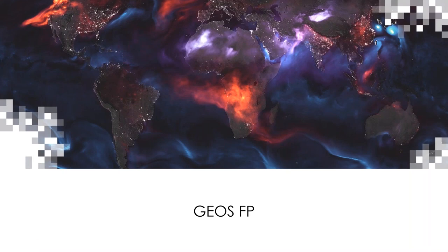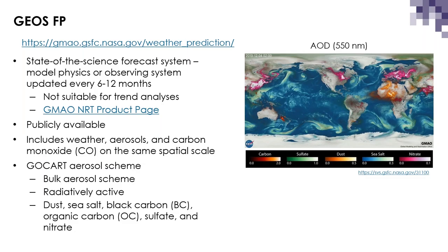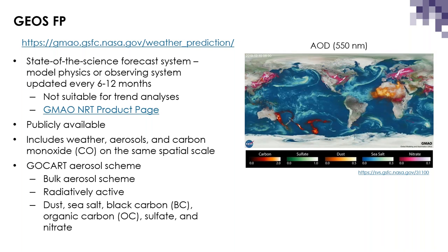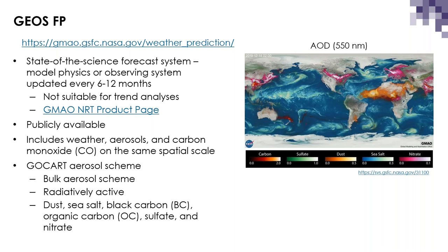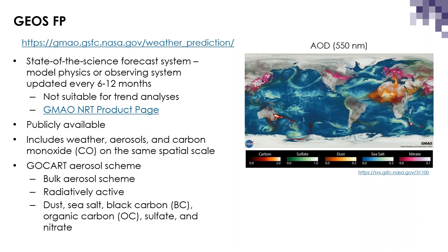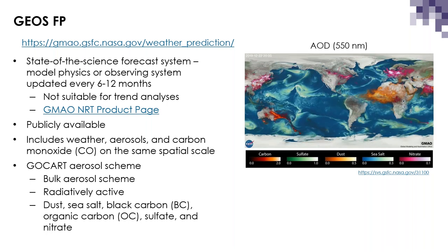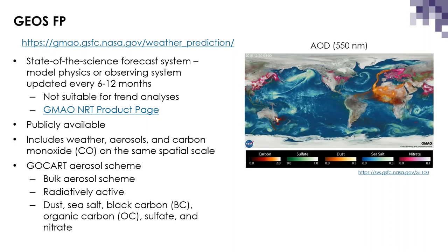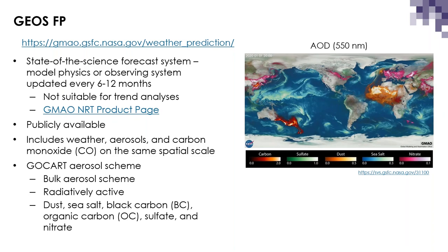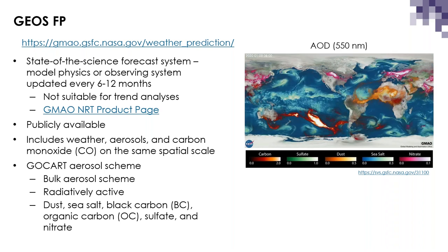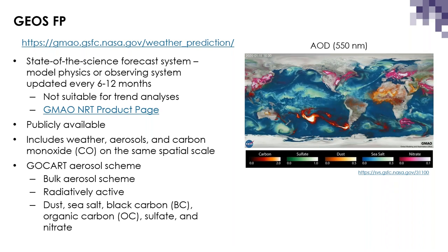We'll start our review of GEOS systems with GEOS FP. GEOS FP offers twice daily publicly available forecasts of weather, aerosols, and carbon monoxide. GEOS FP is a dynamic, state-of-the-science system updated every six to twelve months. Users who want to use FP forecast or analysis fields to drive other models should ensure their simulation period does not span one of these updates, as this can introduce inconsistencies between analysis fields.